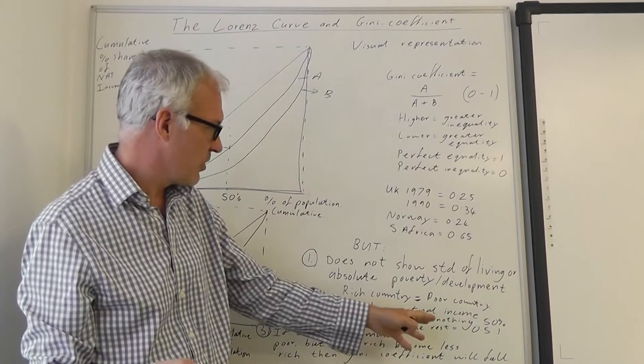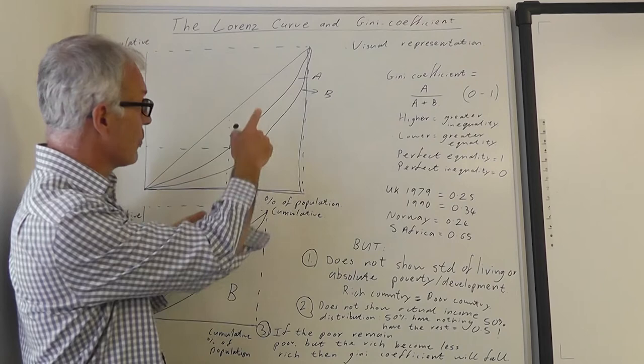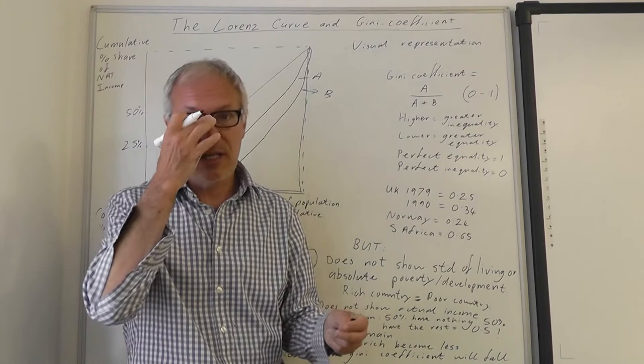Secondly, it doesn't show the actual income distribution. Theoretically, it's possible to have 50% of the population in abject absolute poverty with nothing, no earnings, and the other 50% with everything else, and that would come out as 0.5. So it doesn't show the actual distribution of income, but it gives an indication.